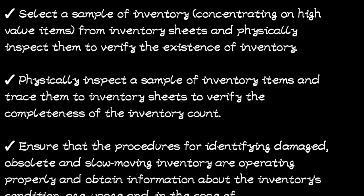Another procedure is to physically inspect a sample of inventory items and trace them to inventory sheets to verify completeness. You select a sample of inventory from the store and inspect it to see if it was actually recorded on the inventory sheets. For completeness, we go forward — starting from the store then going to the inventory sheets. For existence, we start from the inventory sheets then go to the store.